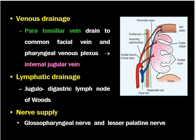Regarding venous drainage, most of the venous drainage of the tonsils is carried out by the paratonsillar vein, which drains into the common facial vein and the pharyngeal venous plexus, and in turn into the internal jugular vein. The lymphatic drainage of the tonsil goes to the jugulodigastric lymph node. Tonsils have efferent lymphatics only. The nerve supply of the tonsils is by the glossopharyngeal nerve and the lesser palatine nerve.